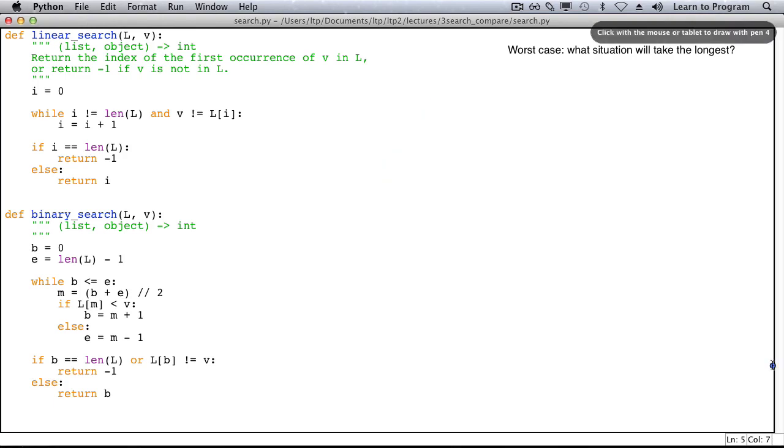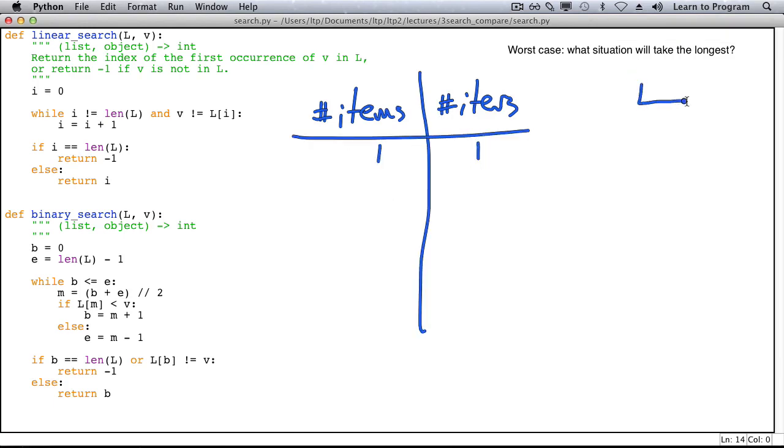And now for binary search. If there is one item then on the first iteration we set m we do a comparison we move either b or e and then the loop terminates. Let's start building our table. If there's one item then there's one iteration. If there are two items then we're going to throw away one half the first time through the loop leaving us with one item and we know how many steps that's going to take. So if there are two items it takes us two iterations.